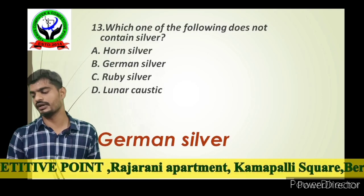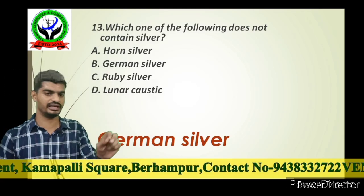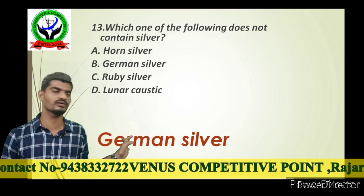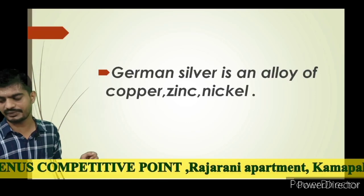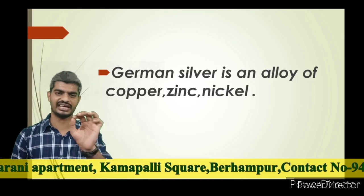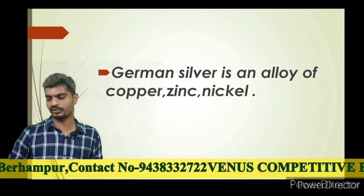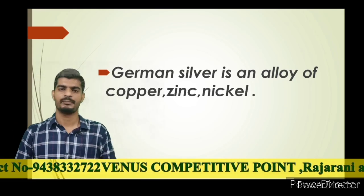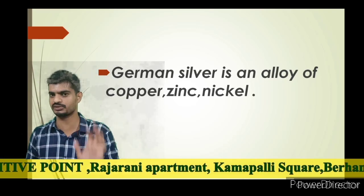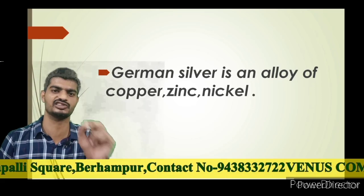Next question: which of the following does not contain silver? German silver does not actually contain silver. German silver is an alloy of copper, zinc, and nickel. Please note down: German silver = copper + zinc + nickel.